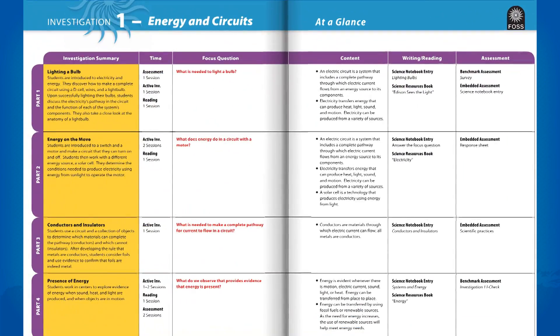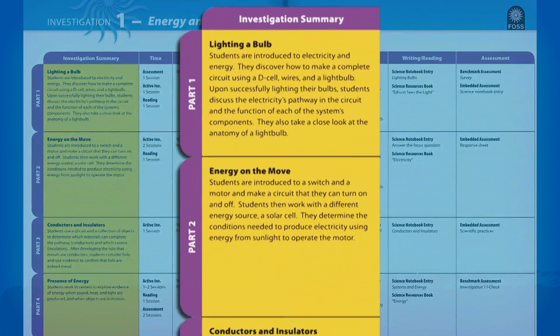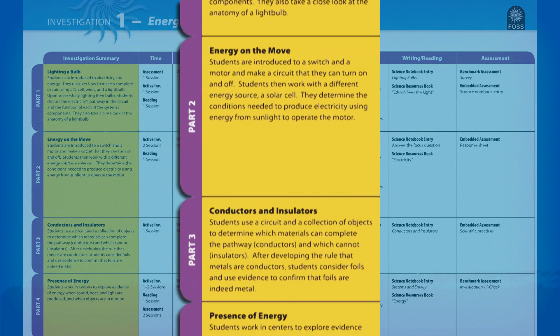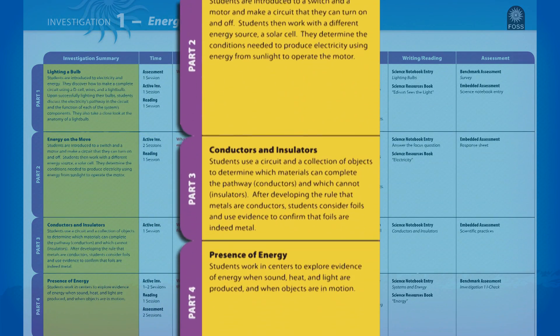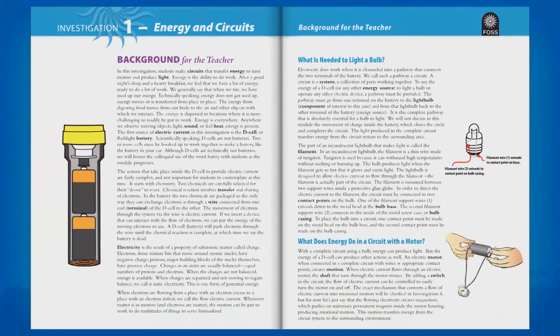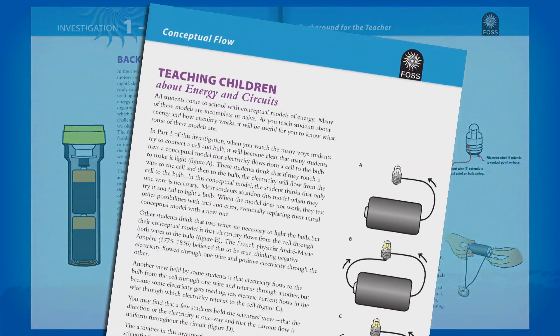The at-a-glance chart at the beginning of every FOSS investigation provides a snapshot of each part in an investigation, including content, what students will write and read, and how you'll assess student work.